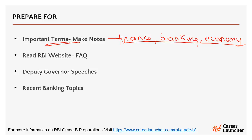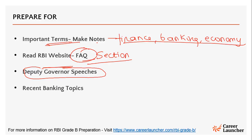Reading the RBI website is the second most important thing you'll have to do. You don't need to read the circulars every now and then — two important things are the Frequently Asked Questions section, which you need to read thoroughly, and all the Deputy Governor's speeches. Deputy Governors regularly document their speeches, which are related to important events they have opinions and analysis on. Tracking these speeches helps you remain updated with important financial and banking events occurring within the economy.